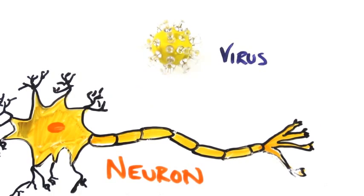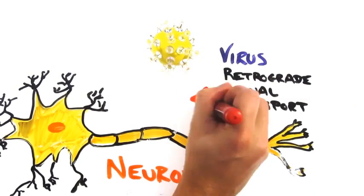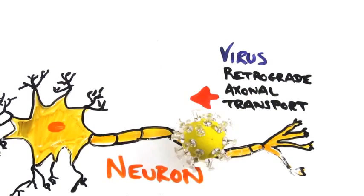Many viruses, such as rabies, take advantage of something called retrograde axonal transport to travel from their entry point to where they want to be. In the case of rabies, the virus can enter anywhere and slowly make its way to your brain or central nervous system.